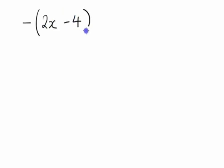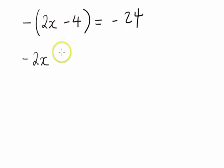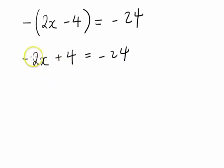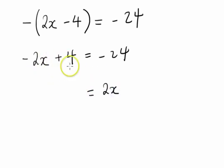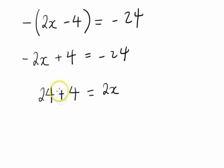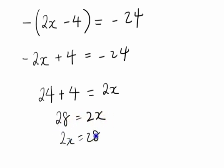Another example: say we have negative bracket 2x minus 4 equals to negative 24. We open the brackets by multiplying negative 1 through: negative times 2x gives negative 2x, and negative times negative 4 gives positive 4, equals negative 24. To make x positive, we rearrange to get 2x equals positive 24 plus 4, which is 28. Dividing both sides by 2, x equals 14.